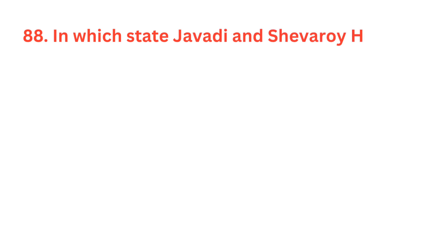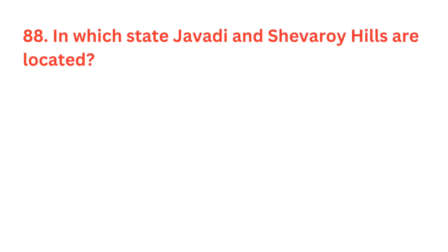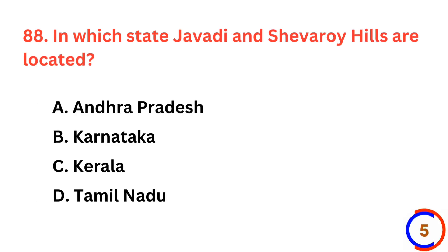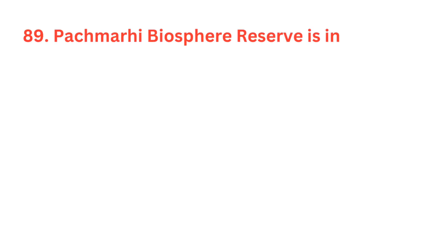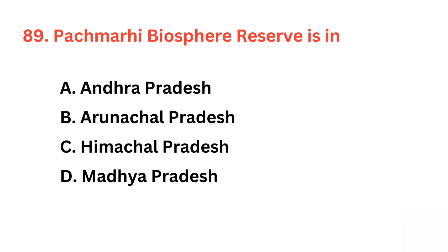In which state are Jawadhi and Shevaroy hills located? The correct answer is option D, Tamil Nadu. Pachmarhi Biosphere Reserve is in? The correct answer is option D, Madhya Pradesh.